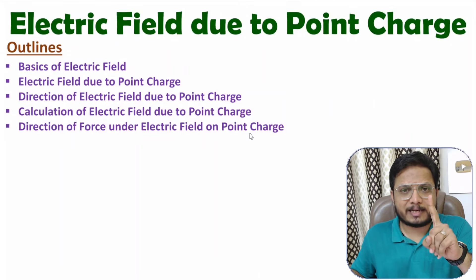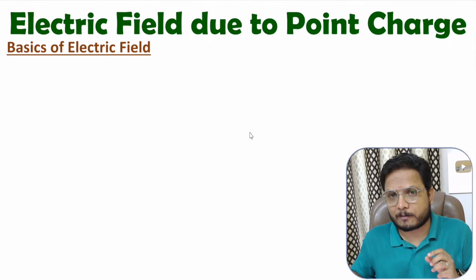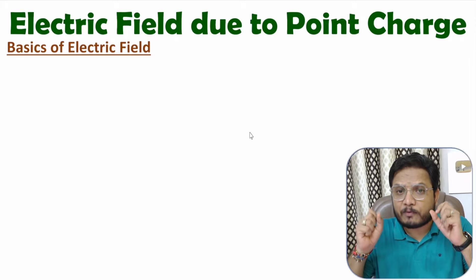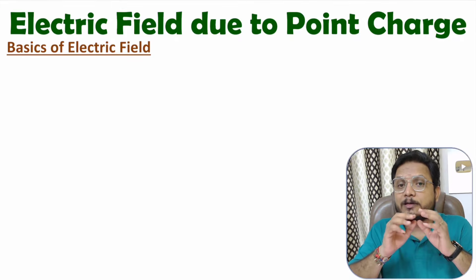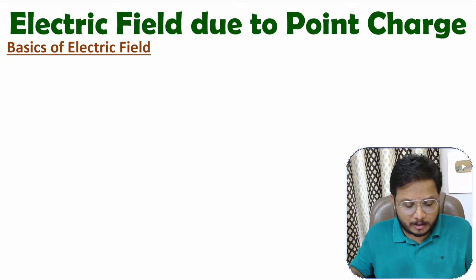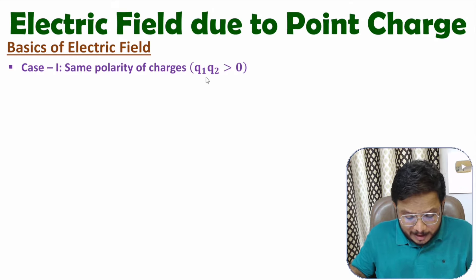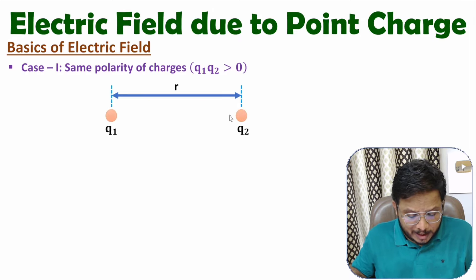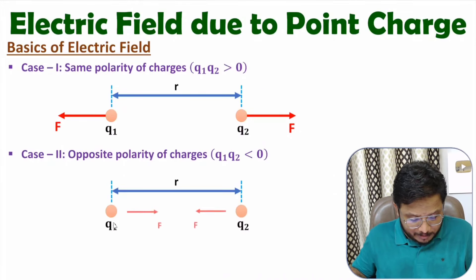Let us start with the first agenda: basics of electric field. In my last video, I explained Coulomb's law, which states that force between two point charges is directly proportional to the magnitude of charges and inversely proportional to the square of distance between them. Coulomb's law explains force between two charges Q1 and Q2. If we have same polarity of charges — Q1 times Q2 is greater than zero — then force between these two charges will be repulsive. If we have opposite polarity — Q1 times Q2 less than zero — then force between two charges will be attractive.